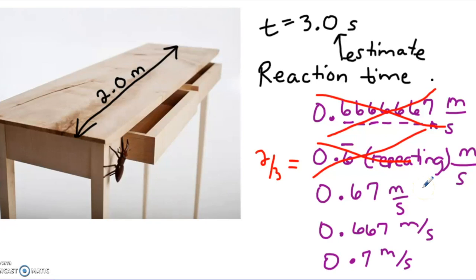So that leaves three choices. Of these three choices, which is the most correct measurement using significant figures? And the correct measurement would be 0.67 meters per second.